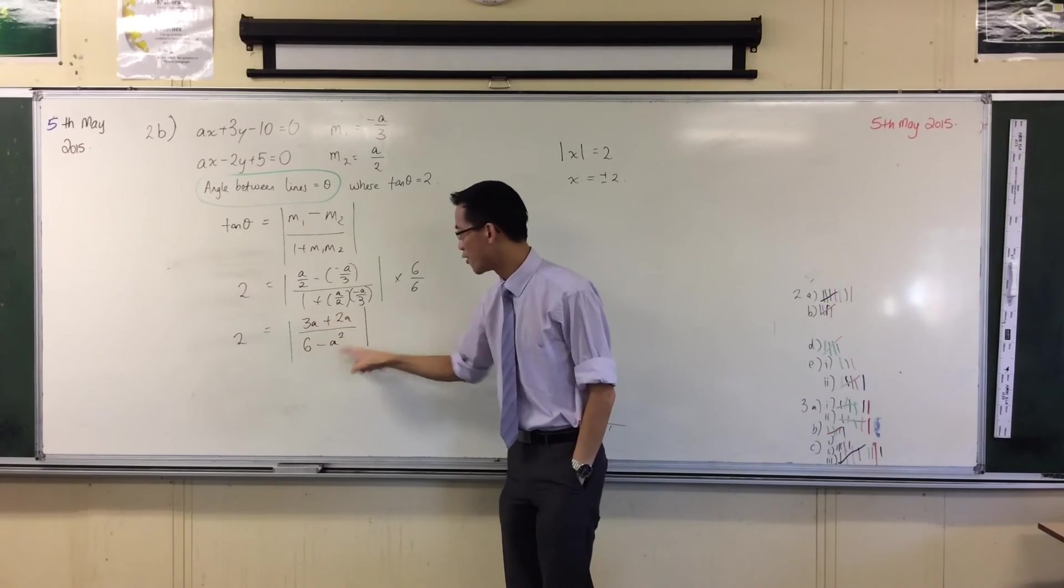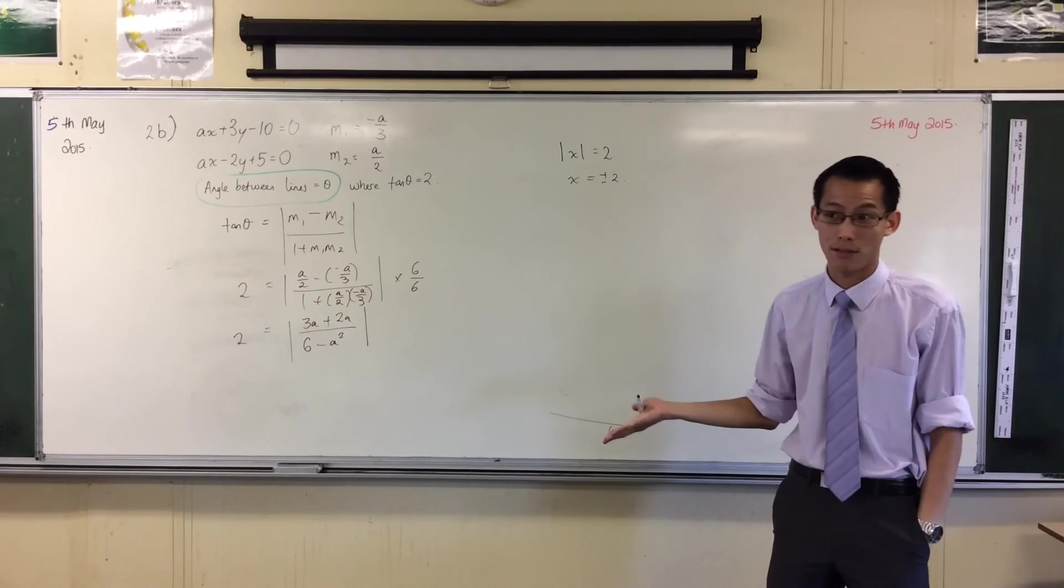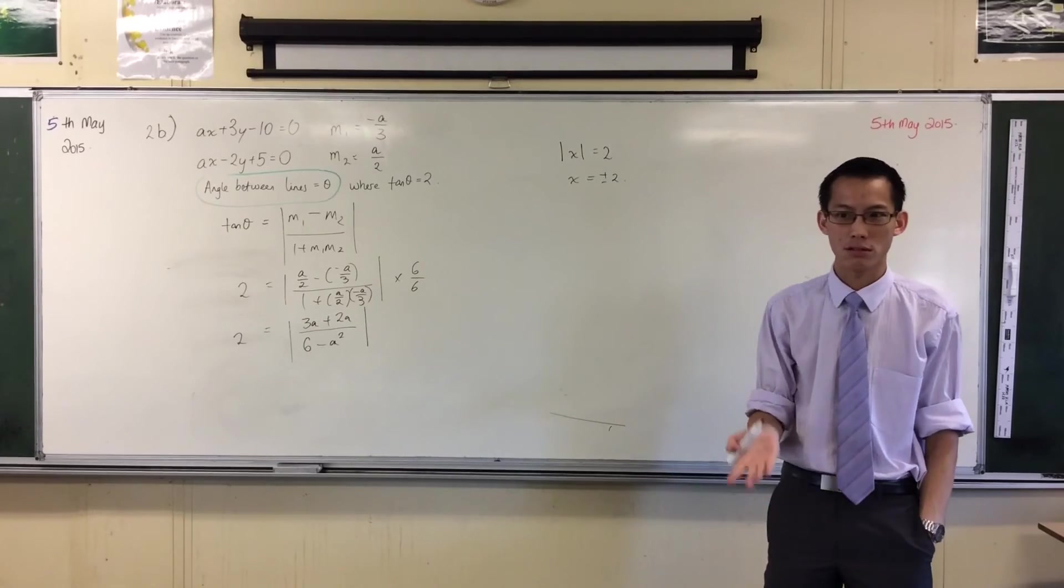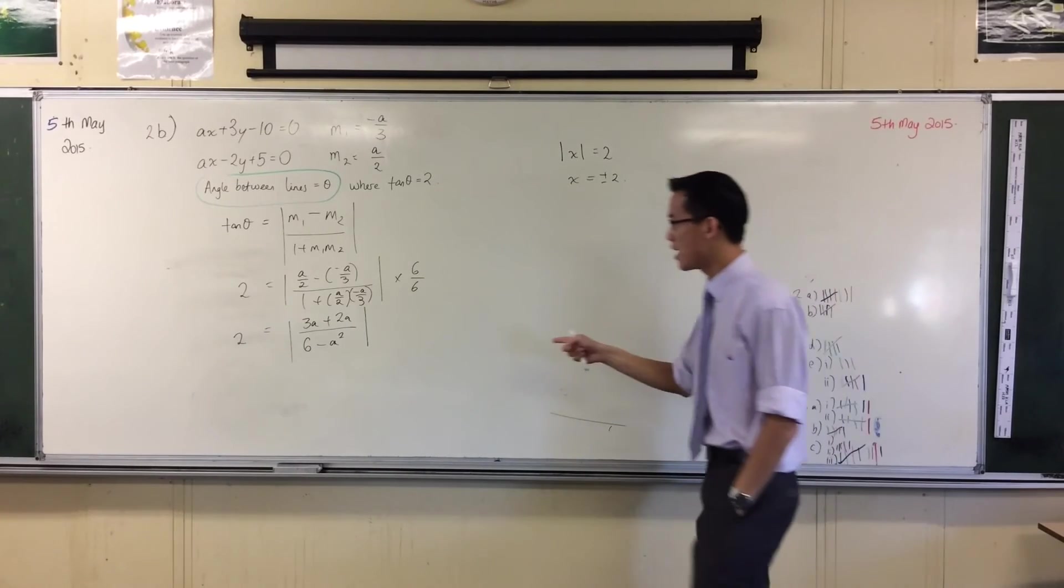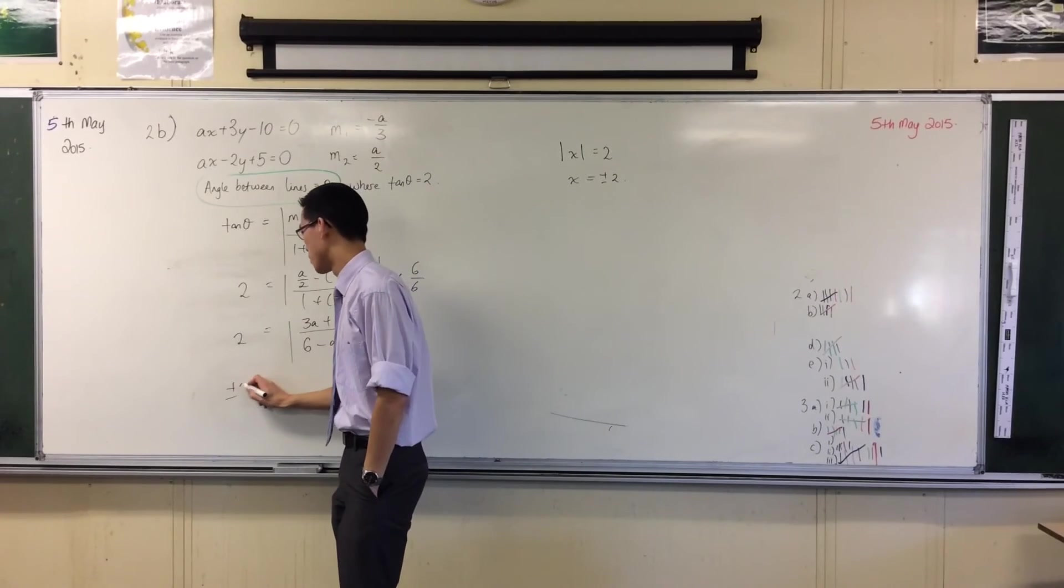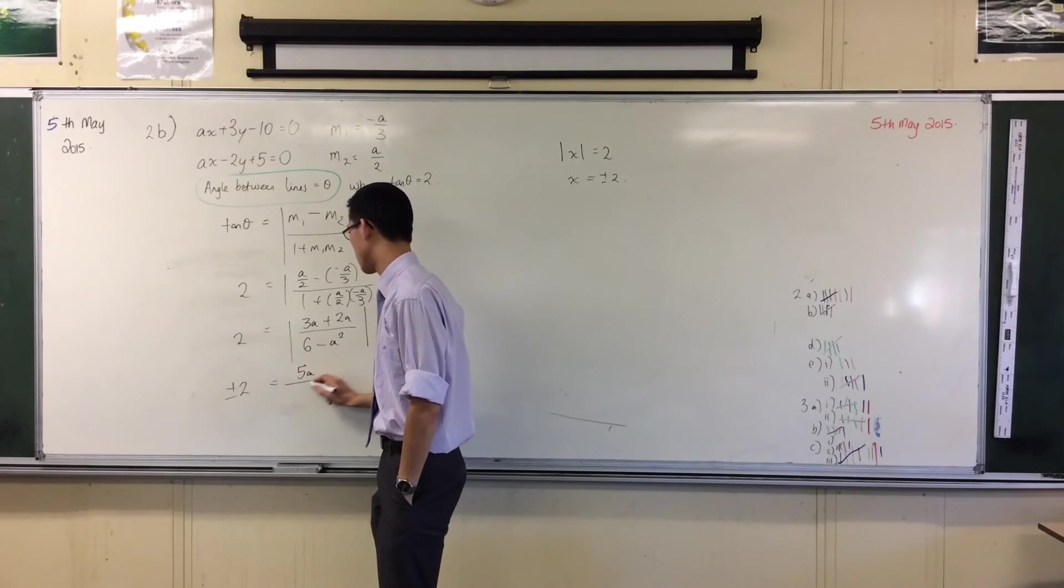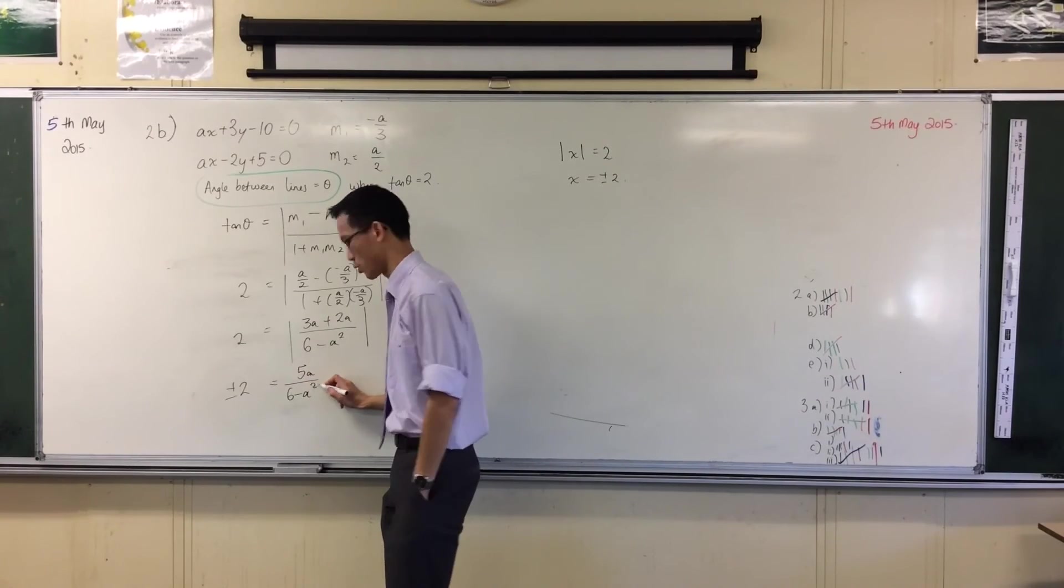You don't really know that this is positive. Who knows what a is? If you choose the right a it'll be negative. Actually all you need is a being negative. So therefore in order to get rid of this absolute value sign I have to say plus or minus two and then on the top you got five a on six minus a squared.